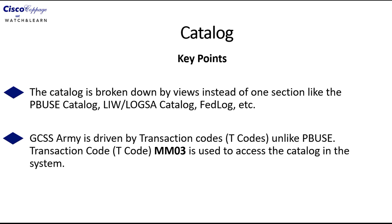You select different views to see whether an item is expendable, non-expendable, durable, etc. This is different from the catalog in PEVIS, LIW, or FEDLOG. The second key point is that GCSS Army is driven by transaction codes. This is different from PEVIS. The transaction code MM03 is used to access the catalog in the system.